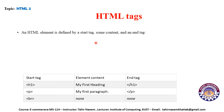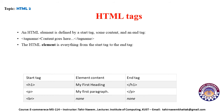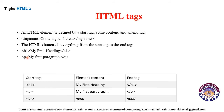HTML tags: all elements are defined by a start tag, some content, and an end tag. The content goes between the start tag and the end tag. An HTML element is everything from the start tag to the end tag. For example: h1 'This is my first heading' slash h1, and p 'My first paragraph' slash p.